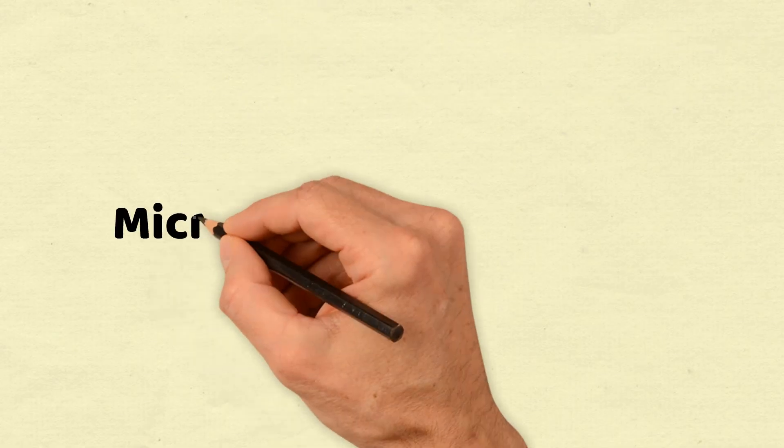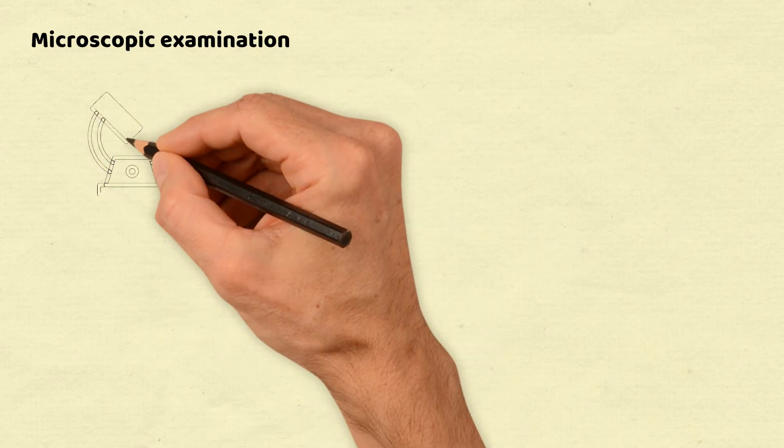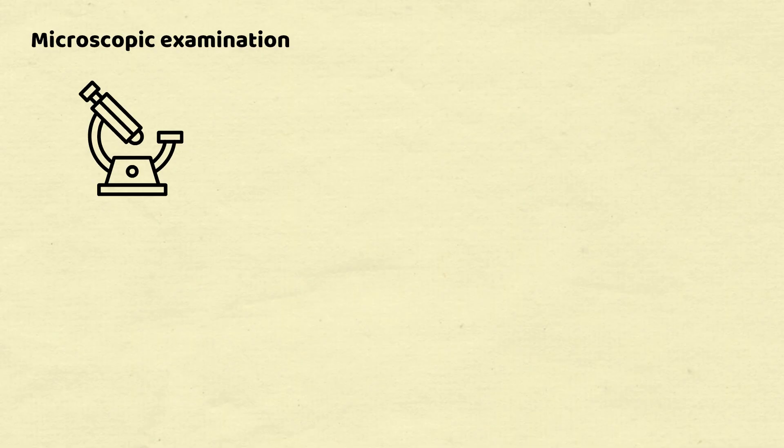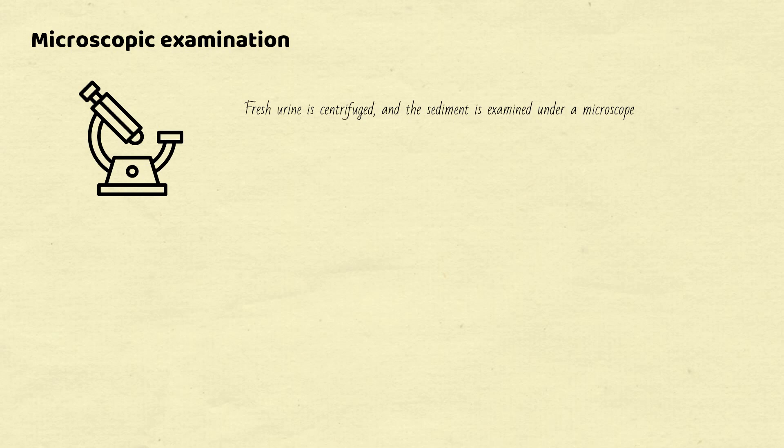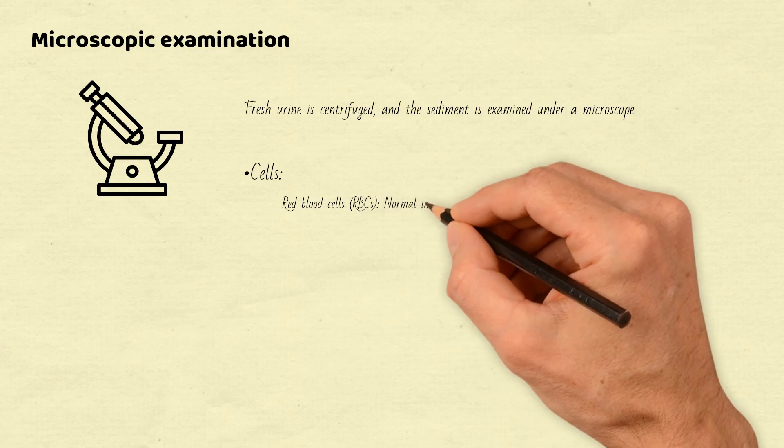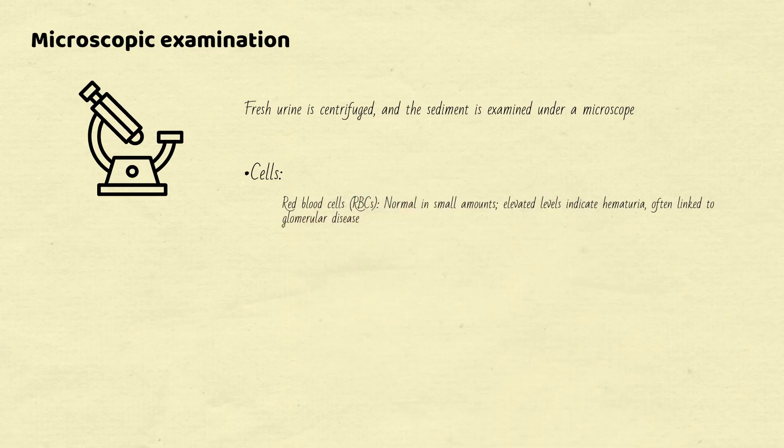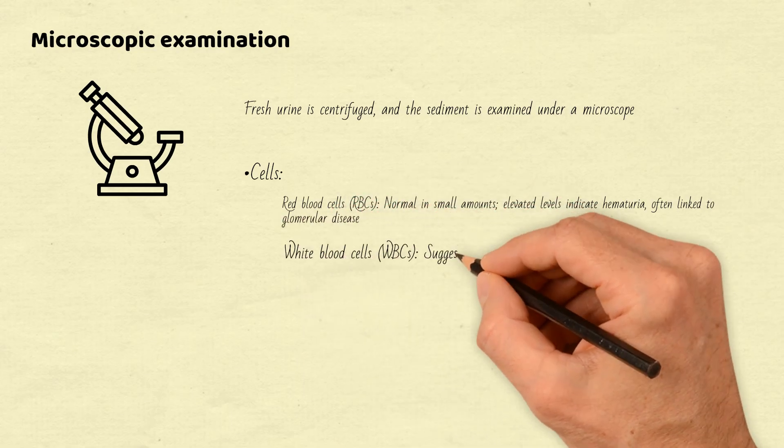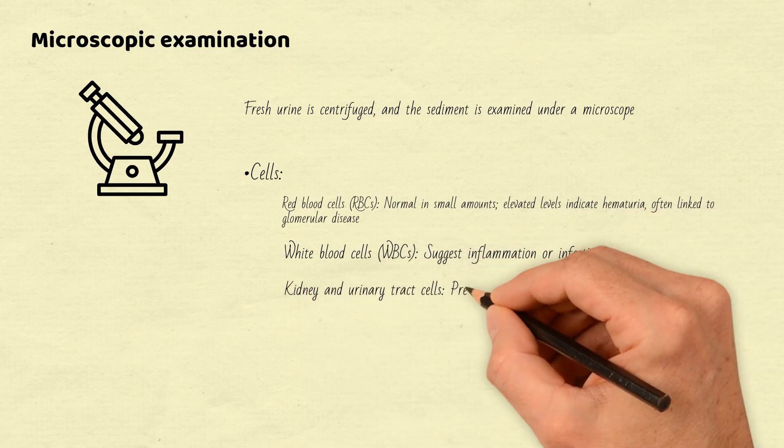Finally, let's explore microscopic examination, a critical step for identifying cells, casts, and other particles in urine sediment. It offers direct insights into kidney and urinary tract health. Fresh urine is centrifuged, and the sediment is examined under a microscope. Here's what we often find. Cells: Red blood cells (RBCs) normal in small amounts, elevated levels indicate hematuria, often linked to glomerular disease. White blood cells (WBCs) suggest inflammation or infection. Kidney and urinary tract cells present naturally in low numbers.